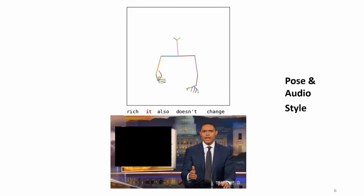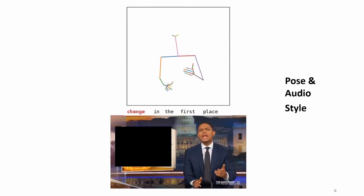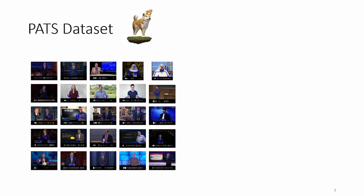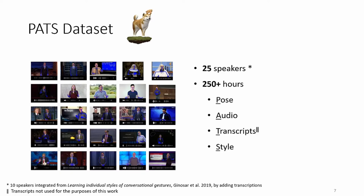To study style transfer of co-speech gestures, we need pose and audio sequences for a lot of different styles of gestures. For this purpose, we introduce PATHS dataset, which consists of monologues of 25 speakers, totaling up to 250 plus hours of data. The data includes pose with the corresponding audio and transcripts of 25 different gesture styles. Out of these, 10 speakers are integrated from a dataset released in 2019 by adding transcriptions.